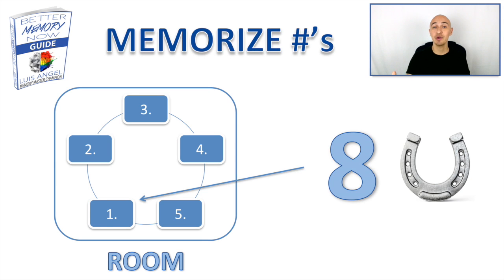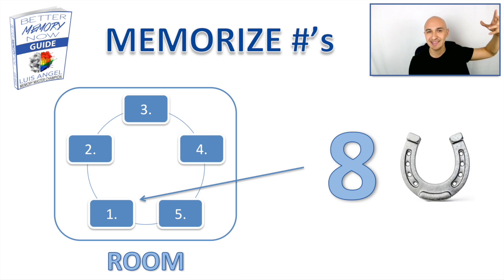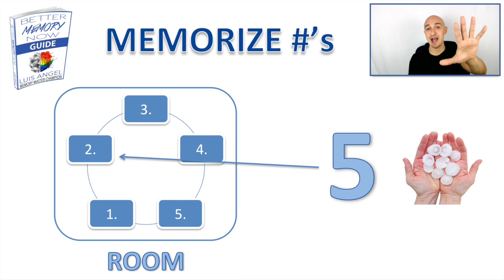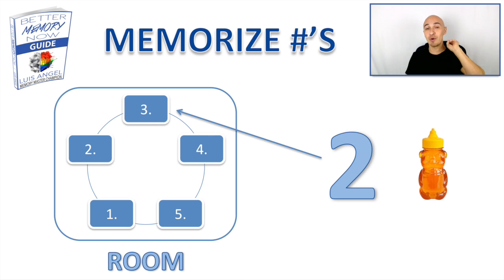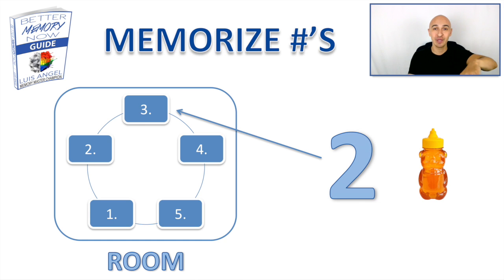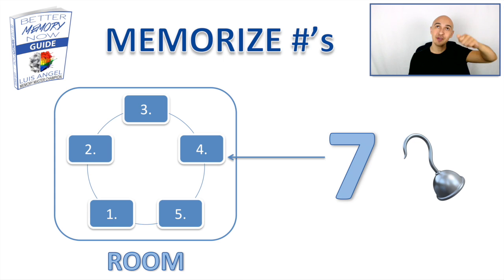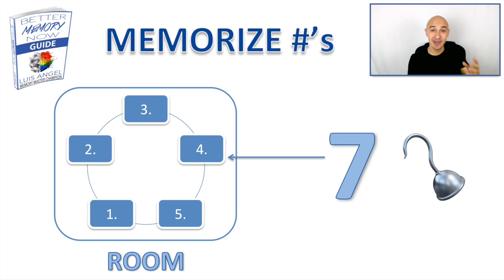Our very first digit is number eight. Picture a horse's hoof doing something on your first location — maybe you're throwing a horseshoe at the window, shattering and breaking it. On the second location, picture number five — hail. Maybe it's hailing on your second location and it's frozen shut. On the third location, picture number two — honey — squirting honey all over your third location. On the fourth location, picture number seven — a hook — maybe scratching the fourth location with a pirate hook. Add sounds, like the screeching sound of scratching.